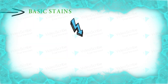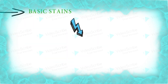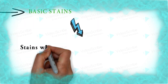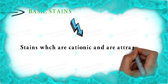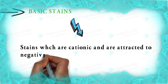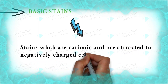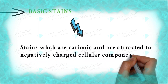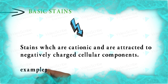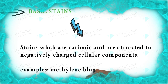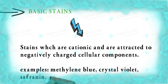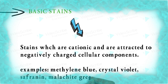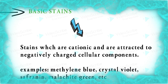Basic stains are cationic in nature and are attracted to negatively charged cellular components. Examples are methylene blue, crystal violet, safranin, malachite green, etc.